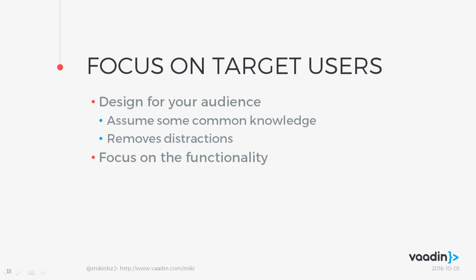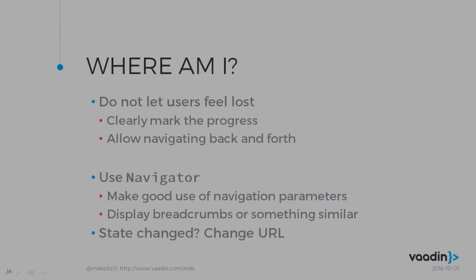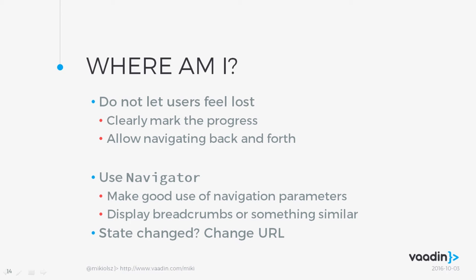If you're developing software, you typically have a target group in mind — a set of people you know are going to use your application. They have certain qualities; you can define them as a group. You should assume some common knowledge. So if you're developing software for engineers, you can assume they likely know mathematics, and if there are complex mathematical terms, you don't have to explain them because it's for engineers. This helps in focusing on the functionality and removing distractions — you don't have to pollute your UI with extra explanations.